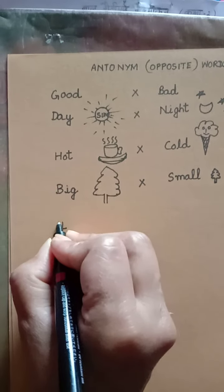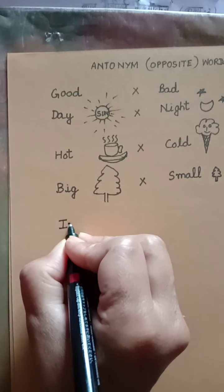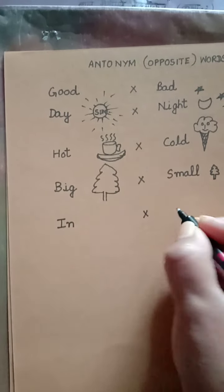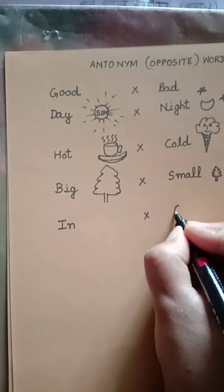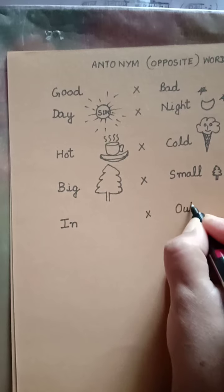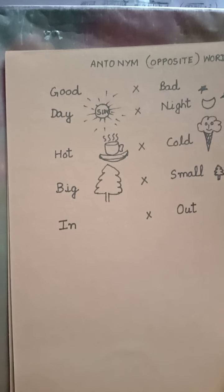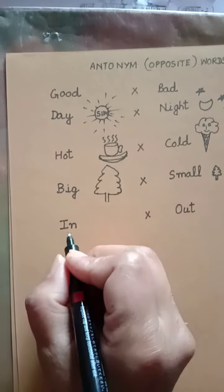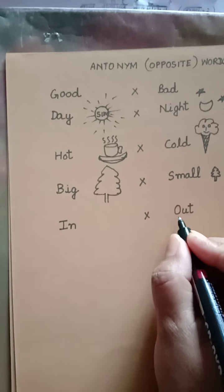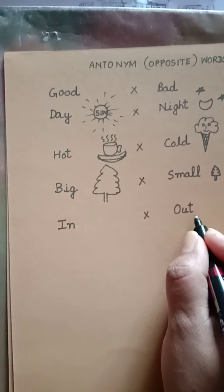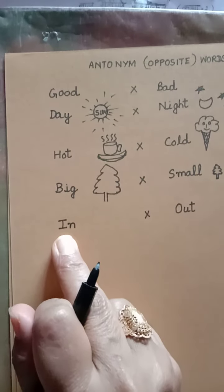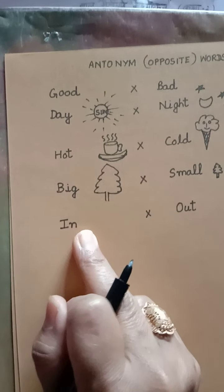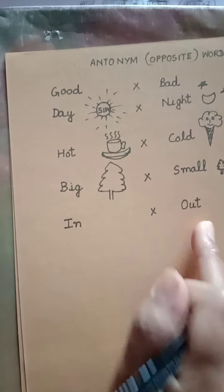Next word is I-N, in. In means andar. The opposite of in is out — O-U-T. Out means bahar. So, the opposite of the word in is out. In means andar, out means bahar.